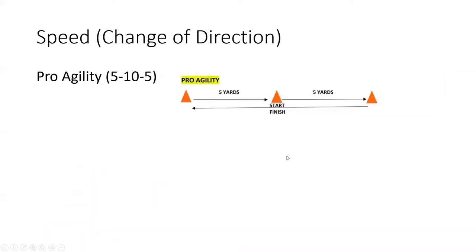For change of direction ability, the pro-agility test is very specific to lateral changes of direction: a 5-yard sprint right, a 10-yard sprint left, and a 5-yard sprint right again — telling you how well an athlete can stop and re-accelerate in an opposite direction. Taken together it equals 20 yards, and you can compare their straight 20-yard speed to their pro-agility time to understand how much they slow down when changing direction.